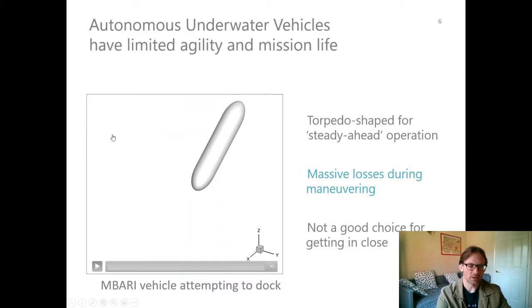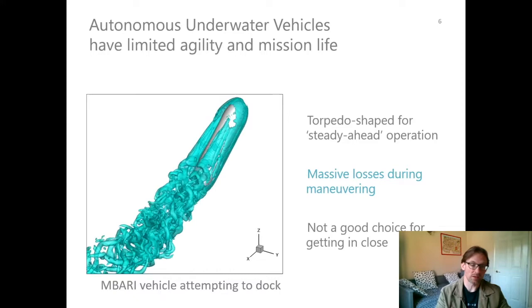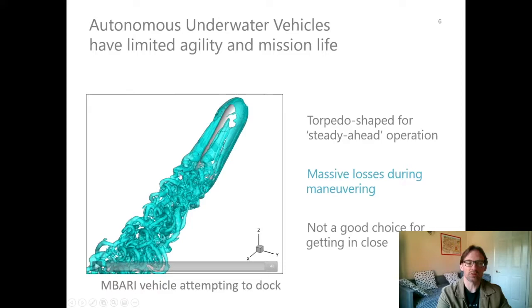Here's a simulation of the flow around a ship like that when it's trying to make a turn. So here are all of these colors. This is showing that there's a lot of turbulence behind this vehicle as it tries to make a turn. And all of this turbulence, this is stirred up water.